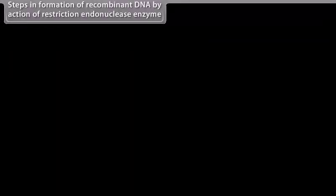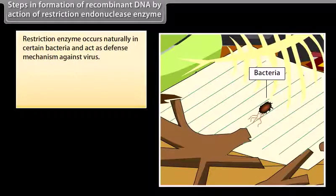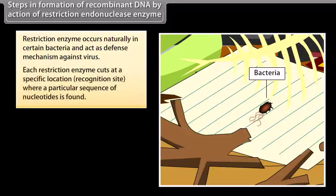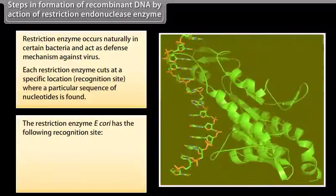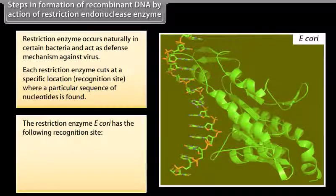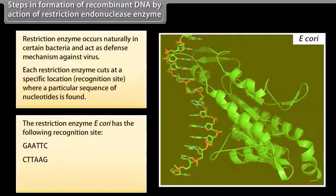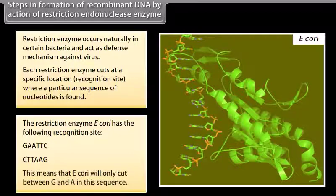Steps in formation of recombinant DNA by action of restriction endonuclease enzyme. Restriction enzyme occurs naturally in certain bacteria and act as defense mechanism against virus. Each restriction enzyme cuts at a specific location, recognition site, where a particular sequence of nucleotides is found. The restriction enzyme E. coli has the following recognition site: G-A-A-T-T-C, C-T-T-A-A-G. This means that E. coli will only cut between G and A in this sequence.